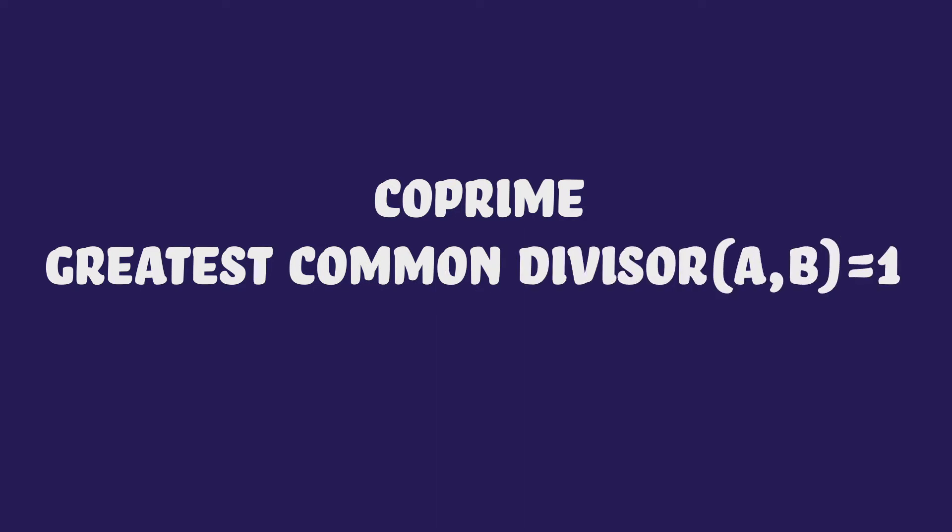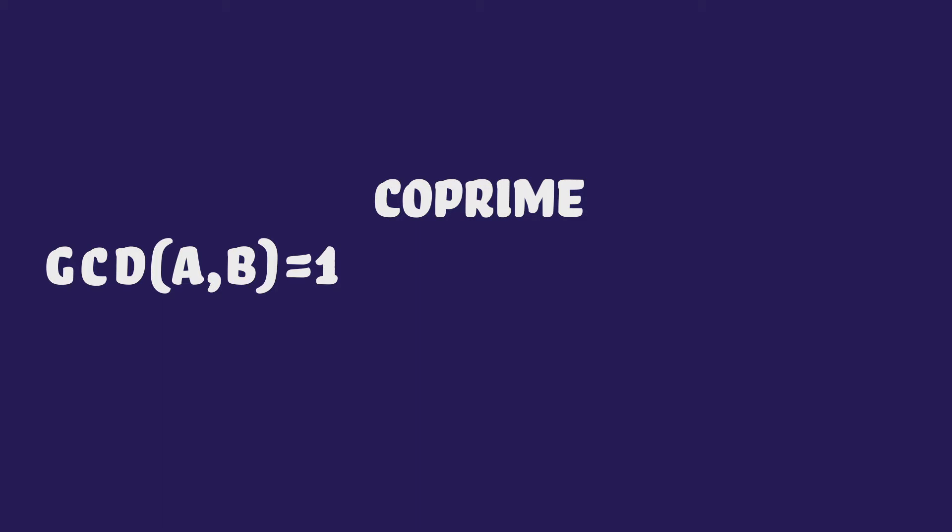Two numbers are coprime if they don't have any factors in common except for one. If you pick two whole numbers, the chance that they will be coprime is 6 divided by pi squared. Why?